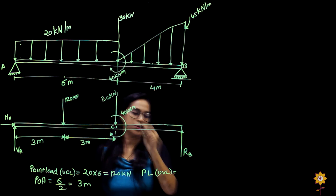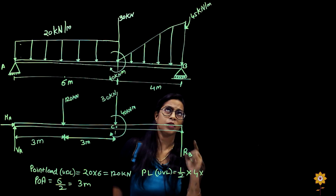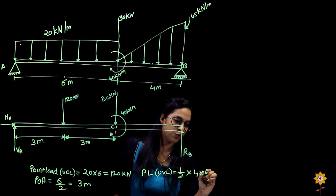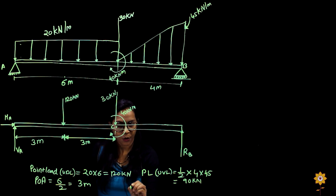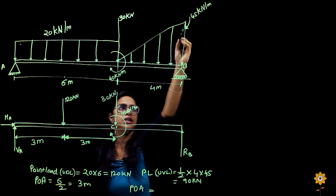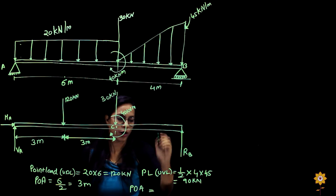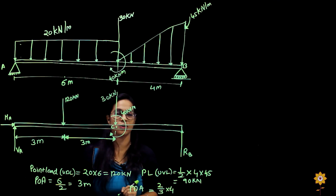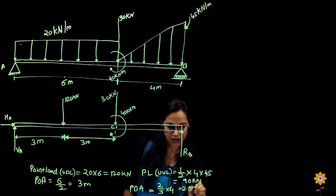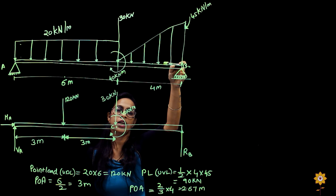For the calculation of the point load for a UVL, it is half the length into the force. The length is 4 and the force is 45 kilo Newton per meter, so it is half into 4 into 45, giving a point load of 90 kilo Newton. The point of application for a UVL is from the apex — the load shape is a triangle. From the apex, the application point is 2 by 3 into the length. Here the length is 4, so it is 2.67 meters. Alternatively, from the base it would be 1 by 3 of L.